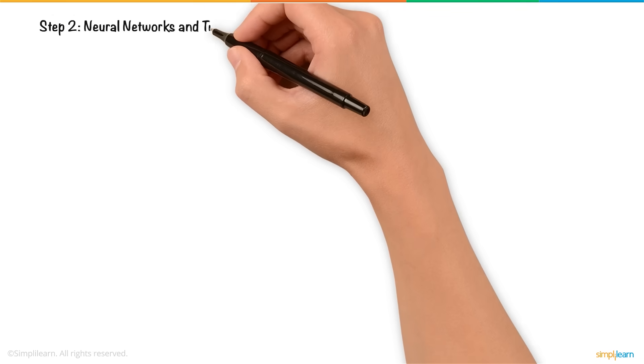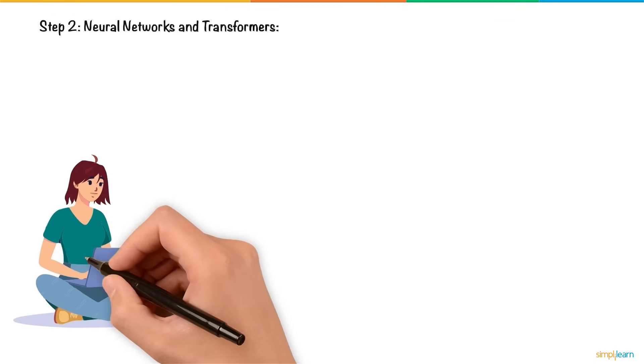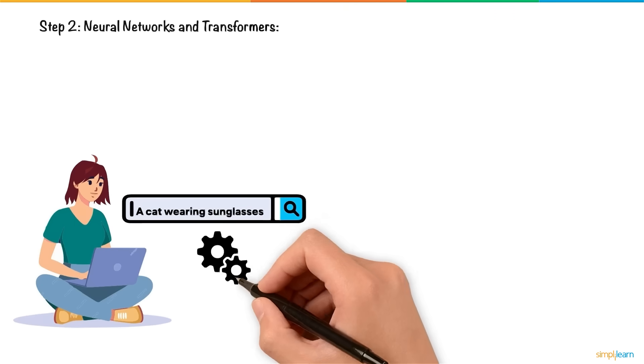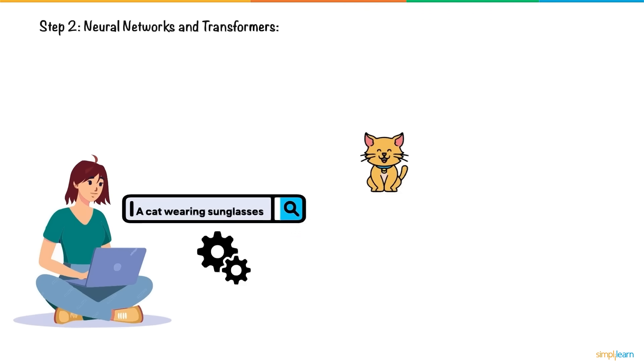Neural networks and Transformers: When Emma inputs a prompt like 'a cat wearing sunglasses,' the transformer model processes the text, recognizing words like 'cat' and 'sunglasses,' and links them to images it learned from during training. Transformers help the AI decide how to combine these elements into a coherent image.